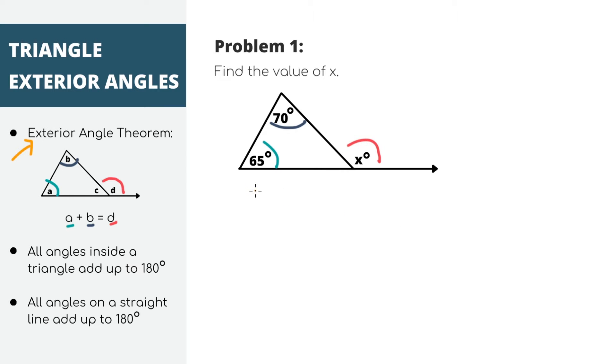For this problem, we can say that 65 plus 70 equals x, which is our exterior angle. Solving we'll get that x equals 135 degrees and that's it, that's our answer.